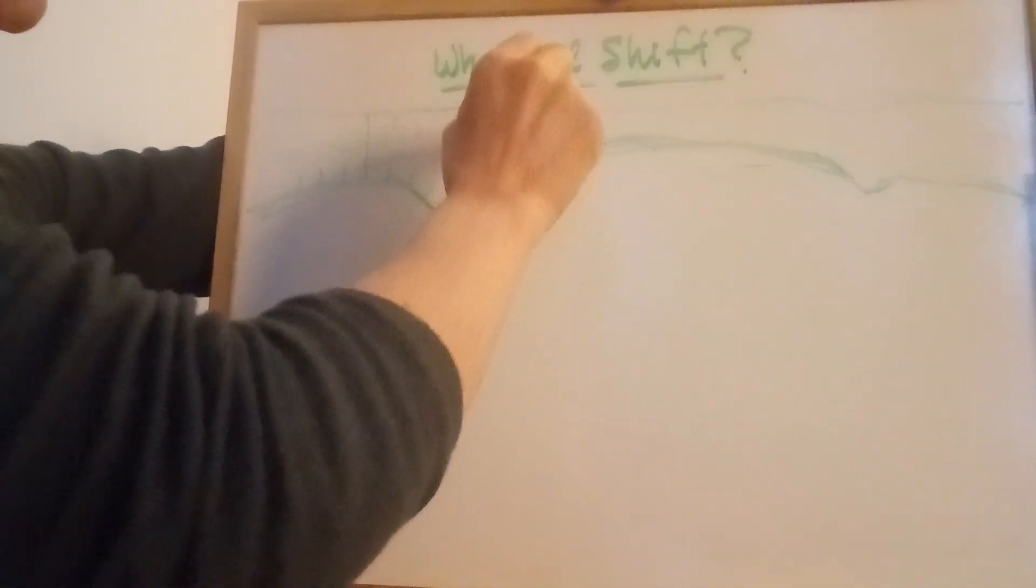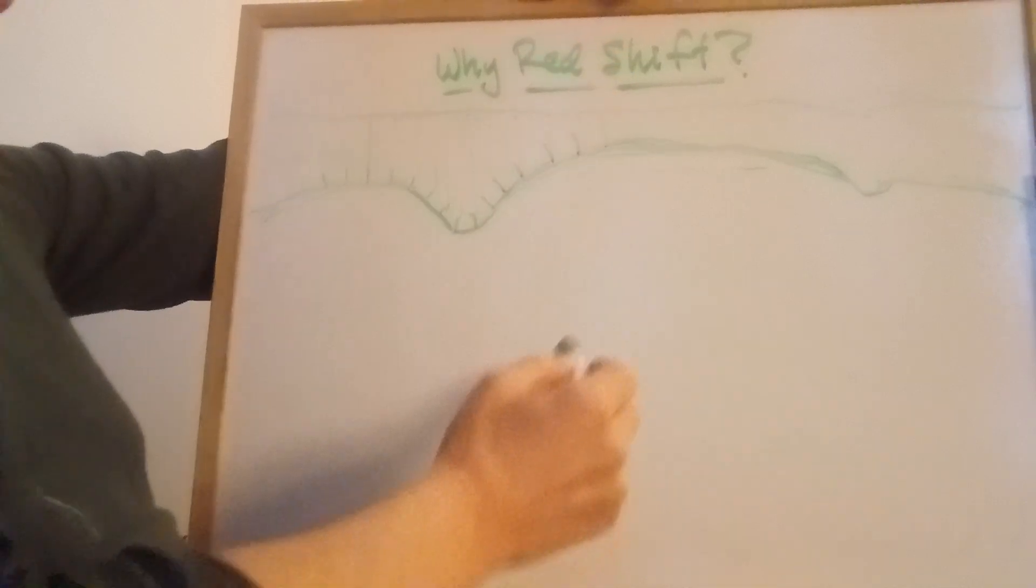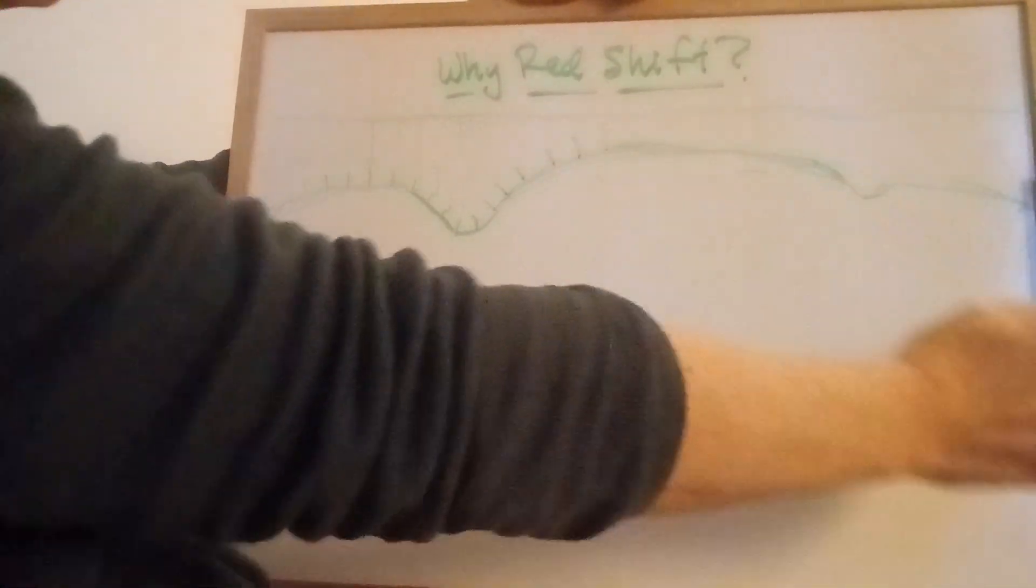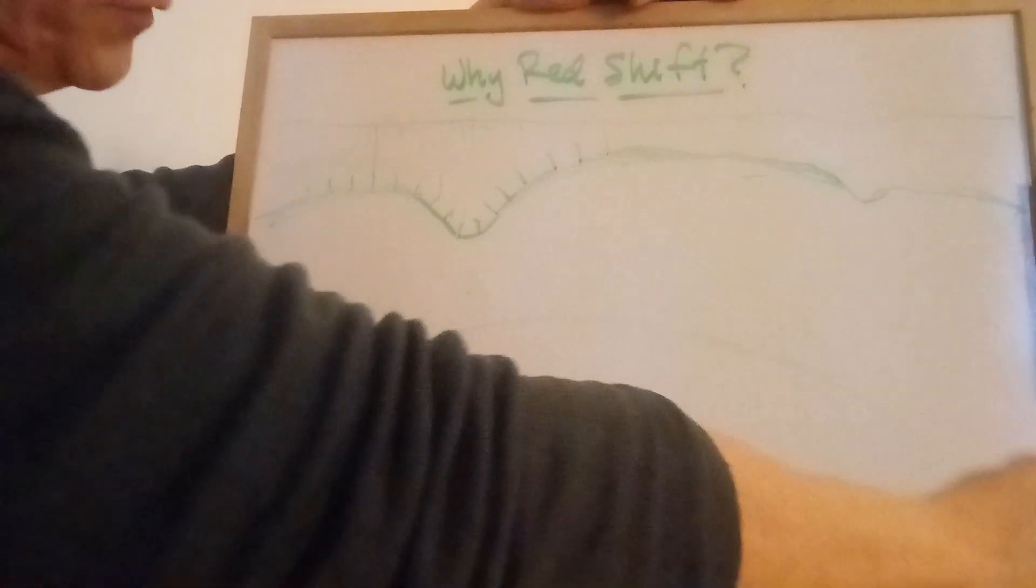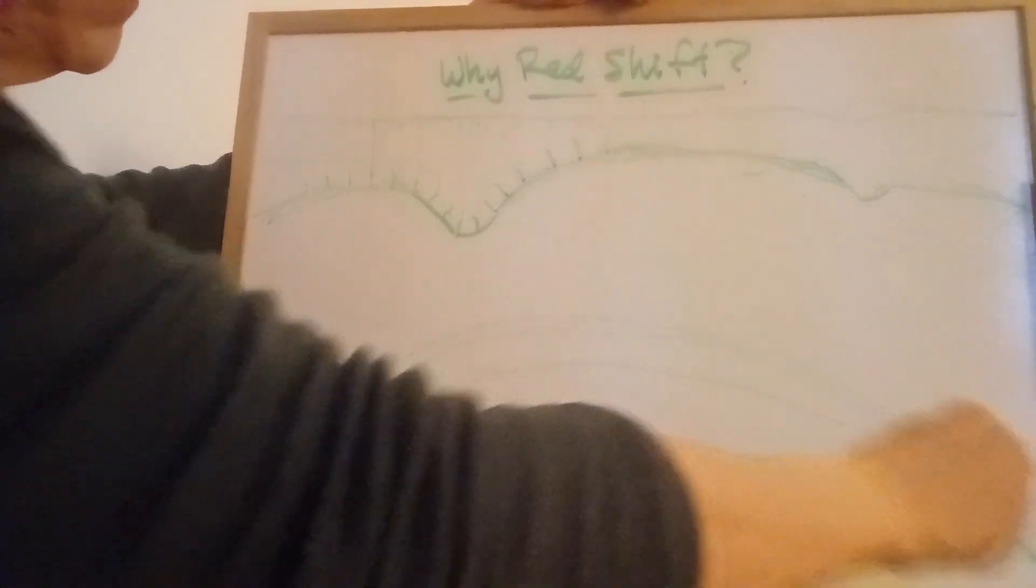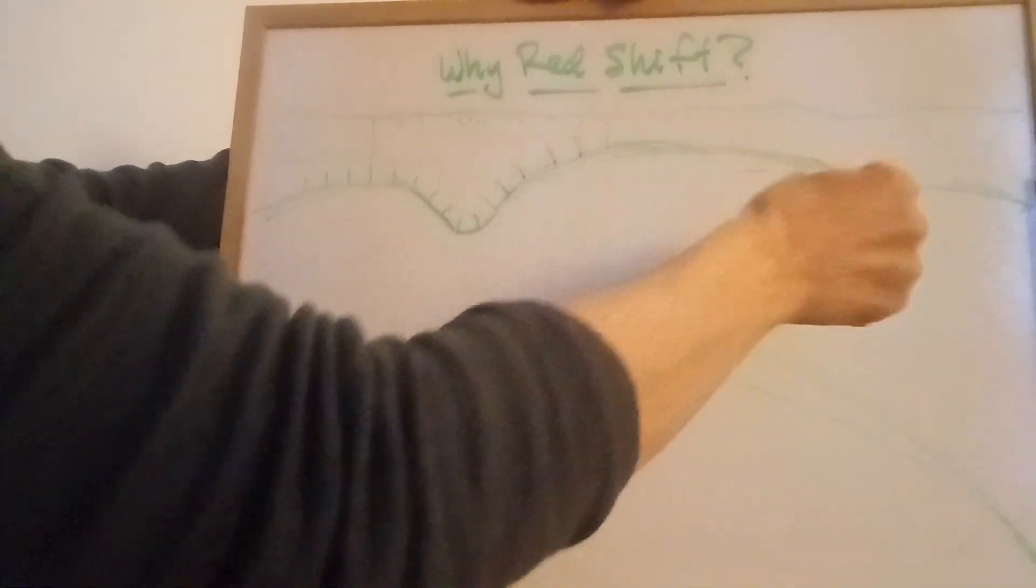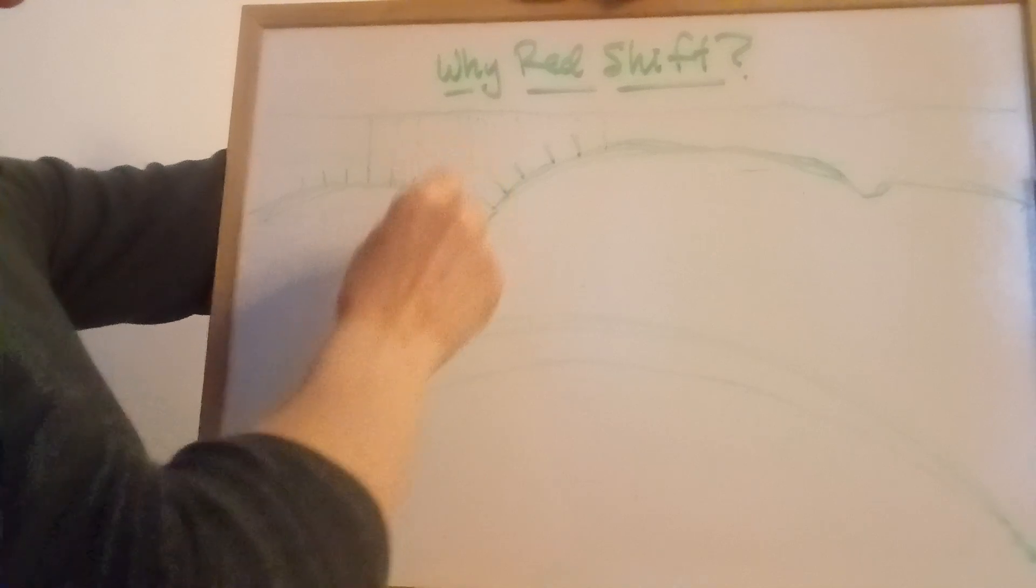Oh, so that's a blue shift near a gravity well. Though overall there's going to be a red shift to the universe, there's blue shifts around localized gravity wells.